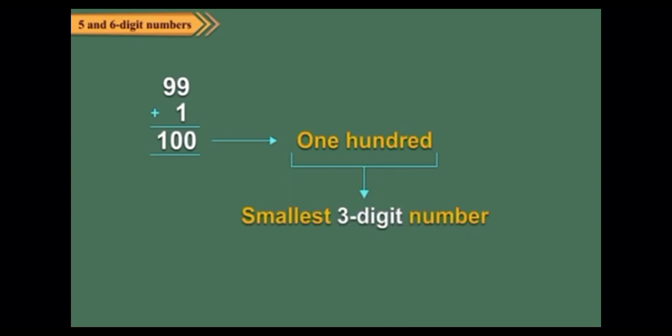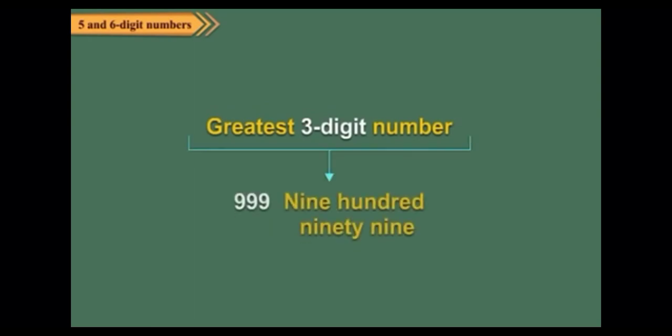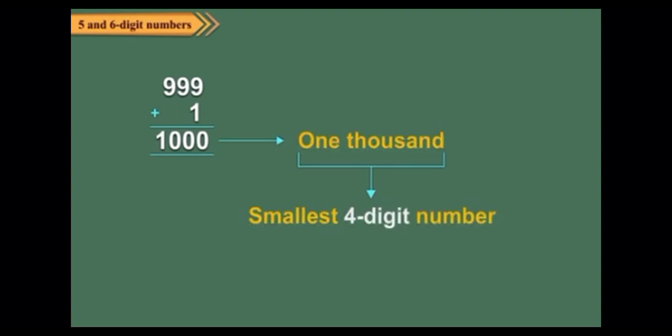The greatest three-digit number is 999, which is read as nine hundred ninety-nine. When we add 1 to 999, we get 1000, which is the smallest four-digit number. It is read as one thousand.